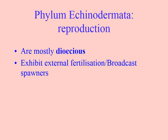Reproduction — overall characteristics of echinoderms. They are mostly dioecious, meaning they are either male or female rather than hermaphrodites. They all have external fertilization and broadcast spawn: they release their eggs and sperm into the water column and hope they find each other, rather than having copulation.